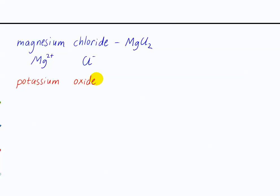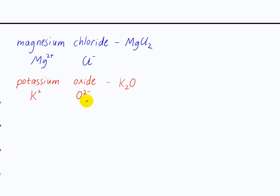Let's try potassium oxide. Potassium — symbol K, element number 19. Potassium is a group 1A element, so its common ion is 1+, and oxide is 2−. To balance a 2− oxygen, you need two potassiums, each contributing 1+. So the formula is K₂O — two potassiums for each oxygen.